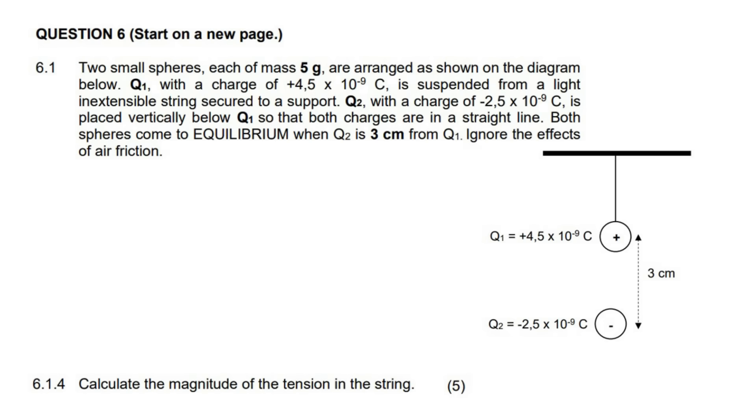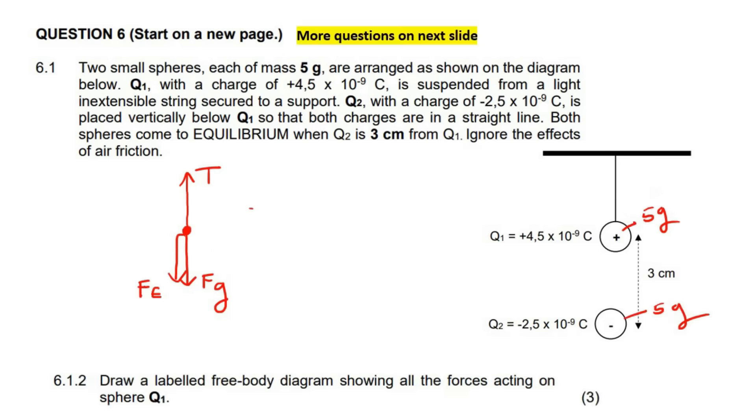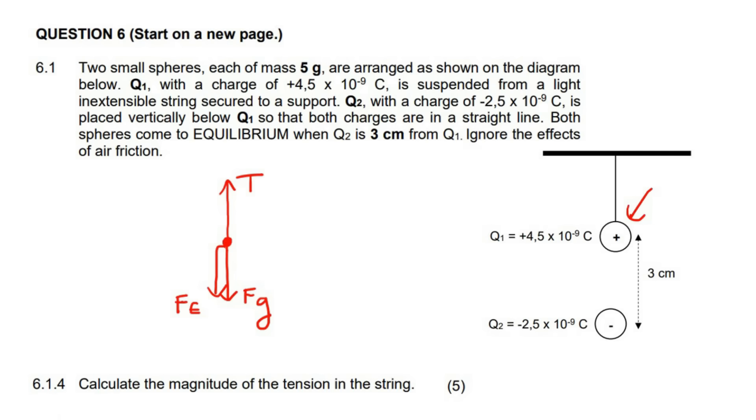This question says calculate the magnitude of the tension in the string. So we had a free body diagram on Q1 already. Here is that free body diagram that we did in one of the earlier questions. So now they want us to calculate the magnitude of the tension. Remember that each of these spheres has a mass of five grams, so it will be really easy to calculate this part. But now we need to think about how to calculate that part which is the electrostatic force between these two objects.